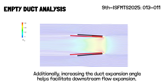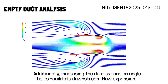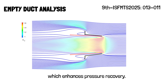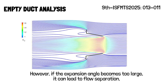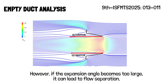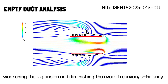Additionally, increasing the duct expansion angle helps facilitate downstream flow expansion, which enhances pressure recovery. However, if the expansion angle becomes too large, it can lead to flow separation, weakening the expansion and diminishing overall recovery efficiency.